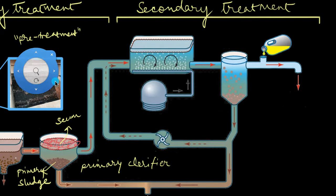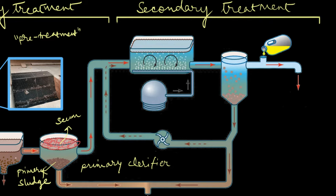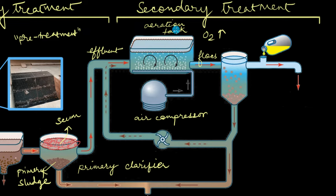Secondary treatment or biological treatment hinges on the activity of microbes. The slightly treated water from earlier, which is also called the effluent, now goes into these aeration tanks. The purpose of this aeration tank is to blow air bubbles into the water, which is done with the help of an air compressor. It's constantly blowing air bubbles into the water and that increases the levels of oxygen. The already present aerobic bacteria and fungi in the water thrive in all of this oxygen and digest the organic matter present.